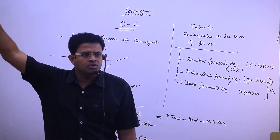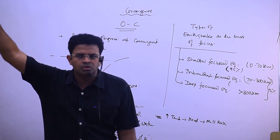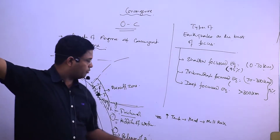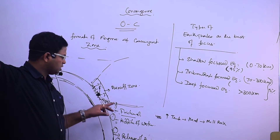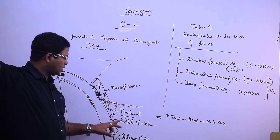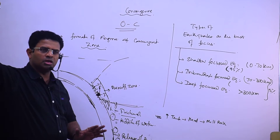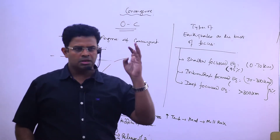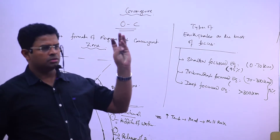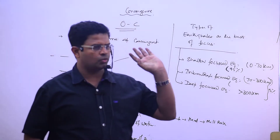This means that at convergent zones there must be explosive volcanic eruptions. Why? Because of the formation of granitic magma through friction, addition of water, and release of pressure. That is clear. And the types of earthquake focus are: shallow, intermediate, and deep focused earthquakes.